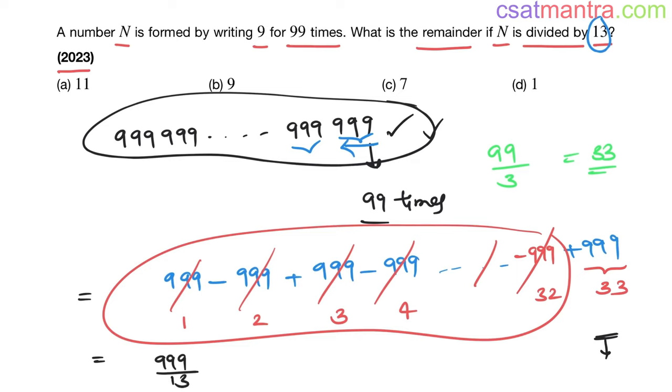You are checking what is the remainder. You are getting 13 sevens are 91. 99 minus 91, 8 left. 89, 13 sixes are 78. 89 minus 78, 11. So you are getting 11 as the remainder here.